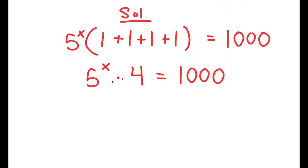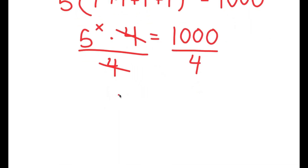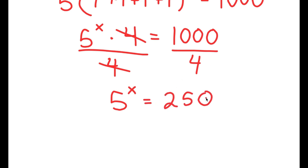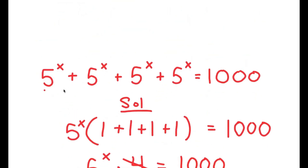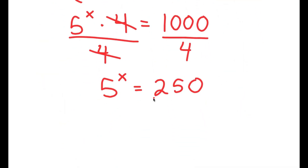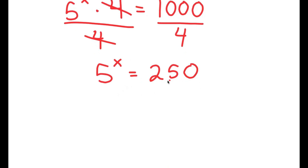Now, we want to isolate x, so I'm going to divide both sides by 4. These two cancel out, and I get 5 to the power of x is equal to 1000 divided by 4, which is 250. So from this large equation, we got down to an equation that is significantly smaller.